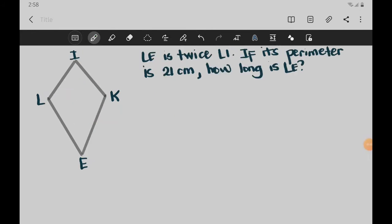Second example is we have LE is twice LI. If the perimeter is 21 centimeters, how long is LE? The first thing that we are going to do is define what perimeter means. So perimeter meaning it is the sum of all sides. That is what we call perimeter.